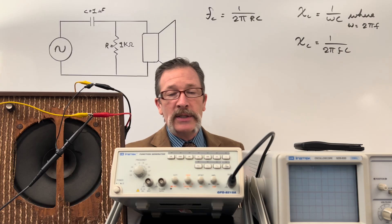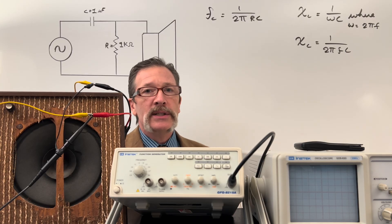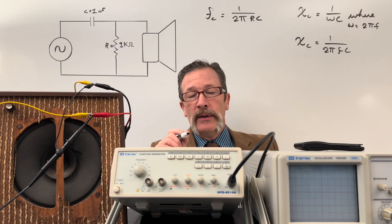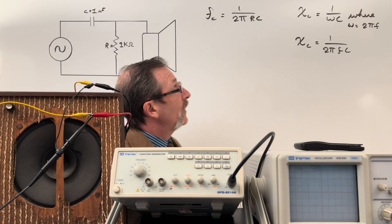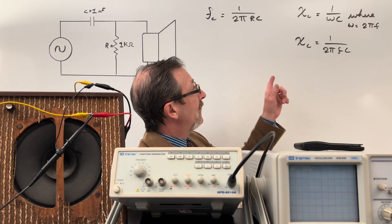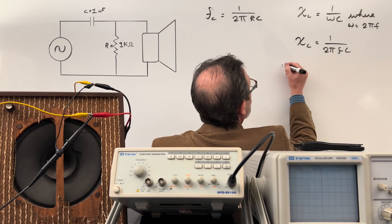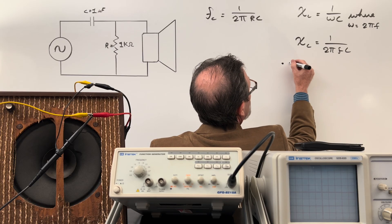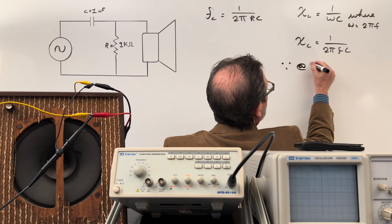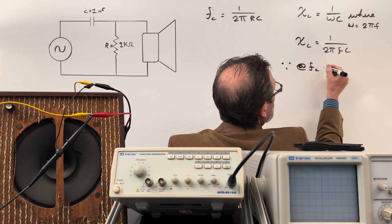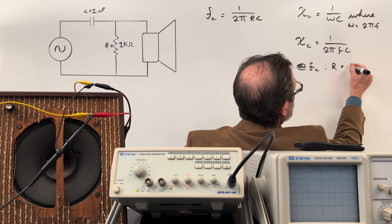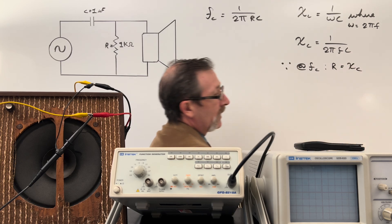Now they've got a way to start thinking about frequency. They can already start making claims, but here's one last hint because there's something special that happens. At our frequency cutoff, our resistance equals our capacitive reactance. So at frequency cutoff, we have R equals Xc.